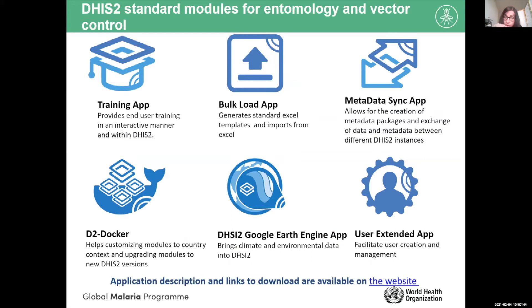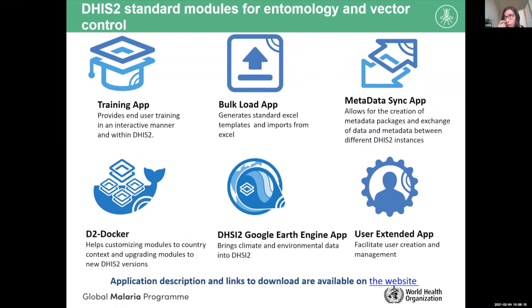There are tools to support the implementation of this tool. An important one is the training app — an application that teaches you how to enter data in DHIS2, how to make graphs so they can start to be automatically generated when you enter data, and how to configure a dashboard with multiple graphs. There is also a tool to upload historical data into the system, and an application to report data to WHO — specifically insecticide resistance data — which allows you to push data directly from your DHIS2 into WHO's systems.